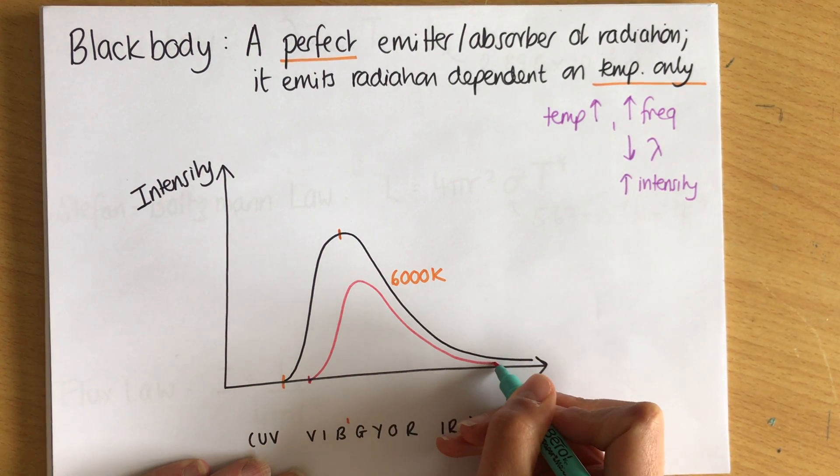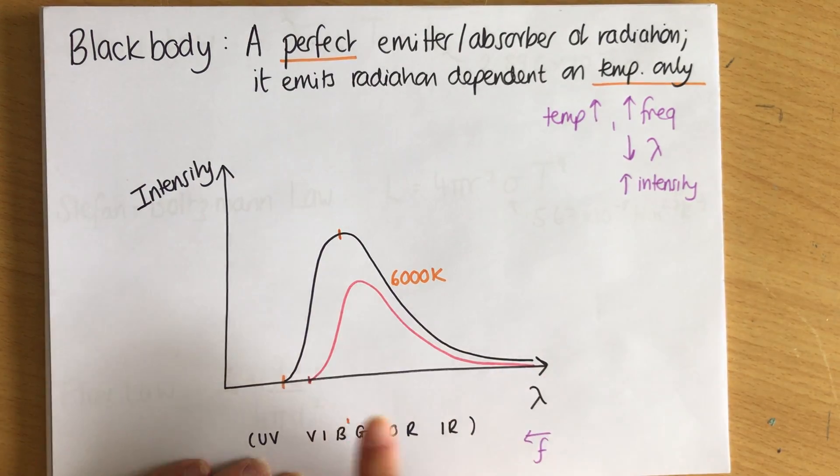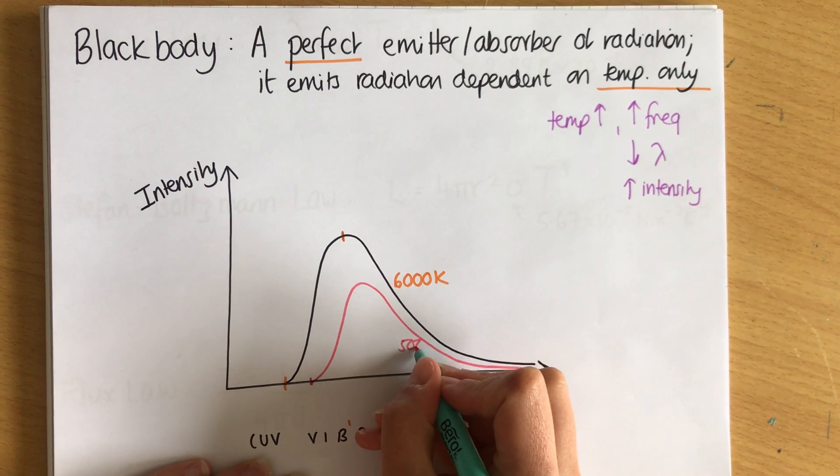Let me try and draw it in, like so. And then it would carry on like that, and it shouldn't hit the bottom there. Sorry, I've just made it hit the bottom there. So this would be colder, let's say this is about 5,000 Kelvin.